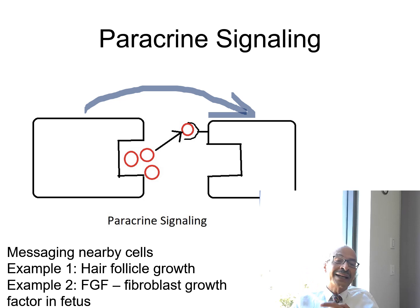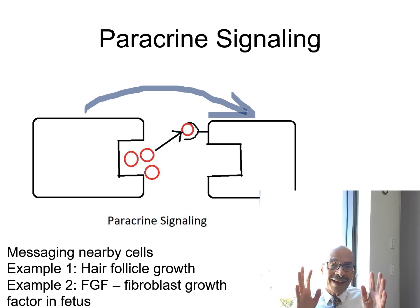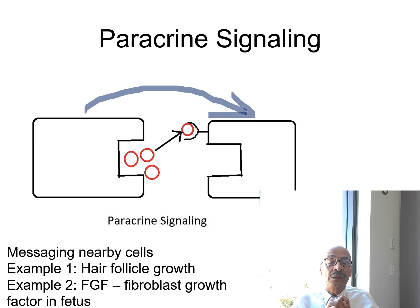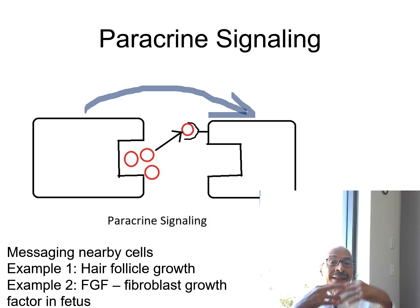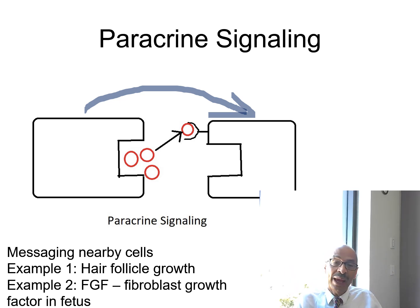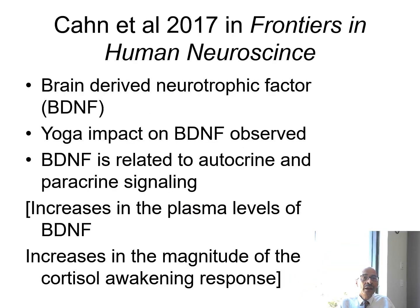Another example of paracrine signaling is fibroblast growth factor in fetuses — how fetuses grow inside the uterus and eventually come out as a baby involves a lot of paracrine signaling.